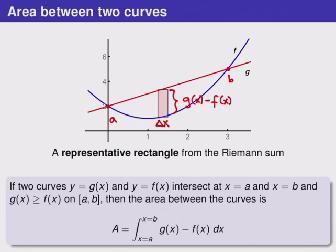We call this box a representative rectangle and we usually only draw it so that it's easier to tell what we're doing on any given picture. So the result we have here says if we have two curves G(x) and F(x) and they intersect at A and B and G is always above F on the interval A to B, then the area between the curves is given by this integral where we take G(x) and subtract F(x) and the integral goes from A to B. The G minus F part of this comes from the height of the box that we drew in right here.